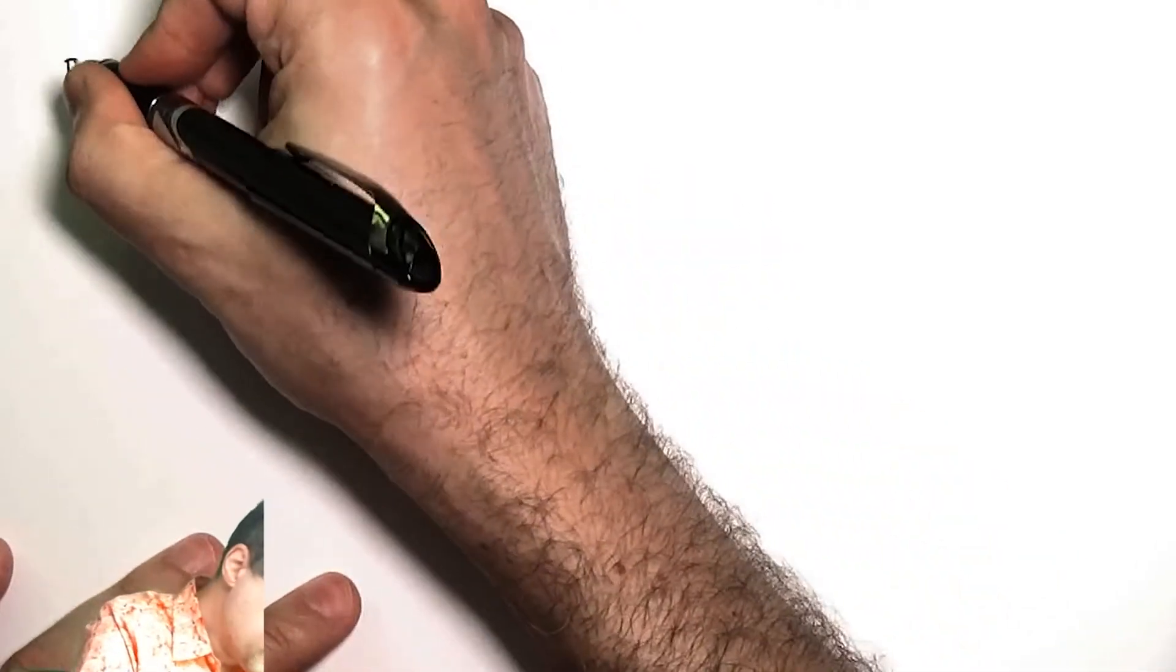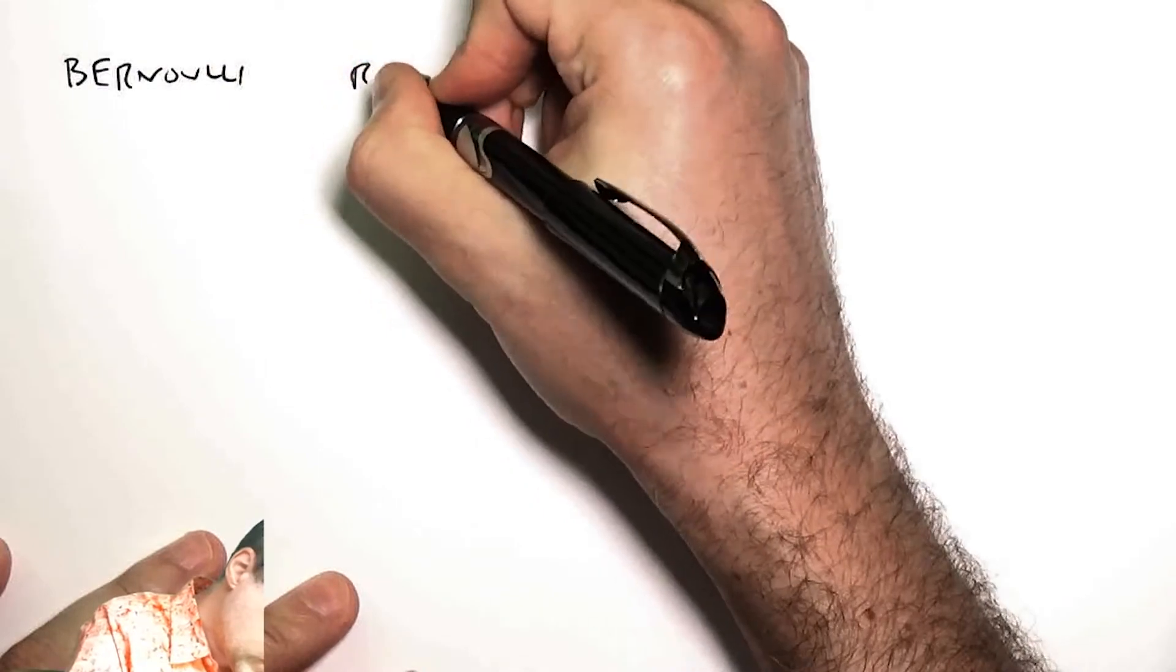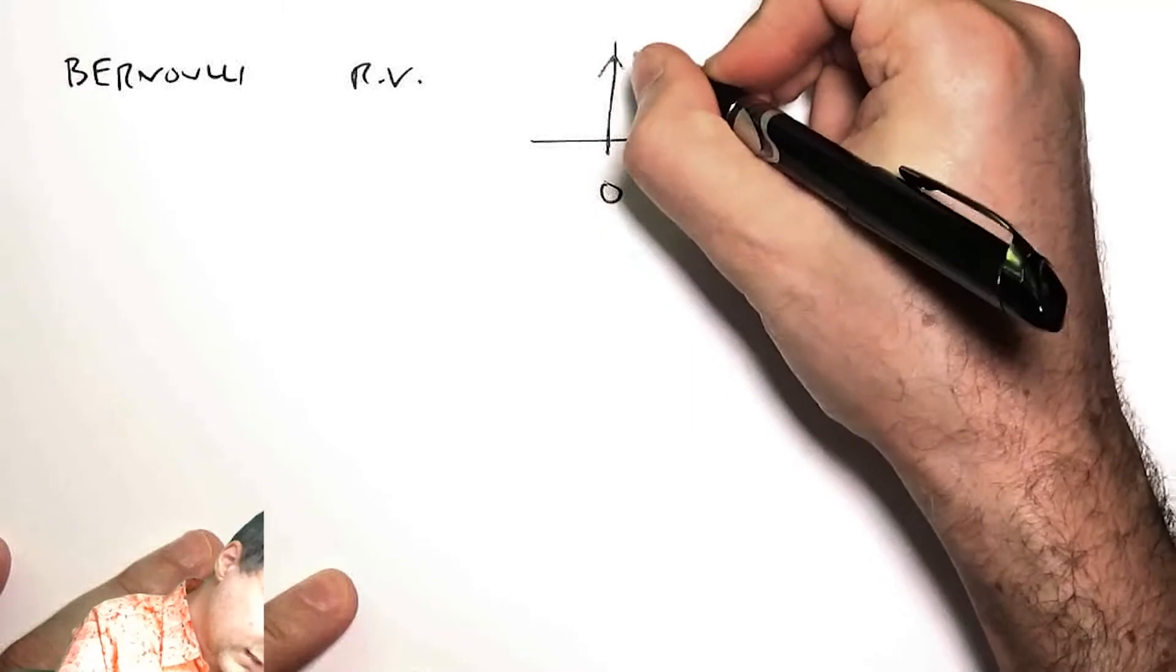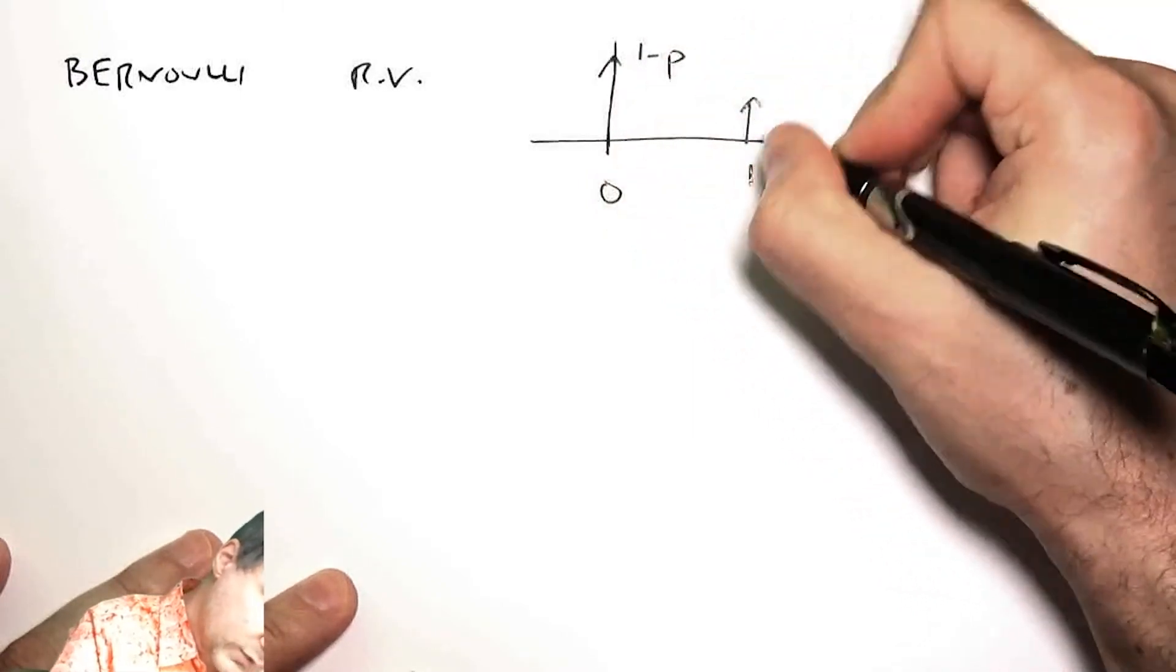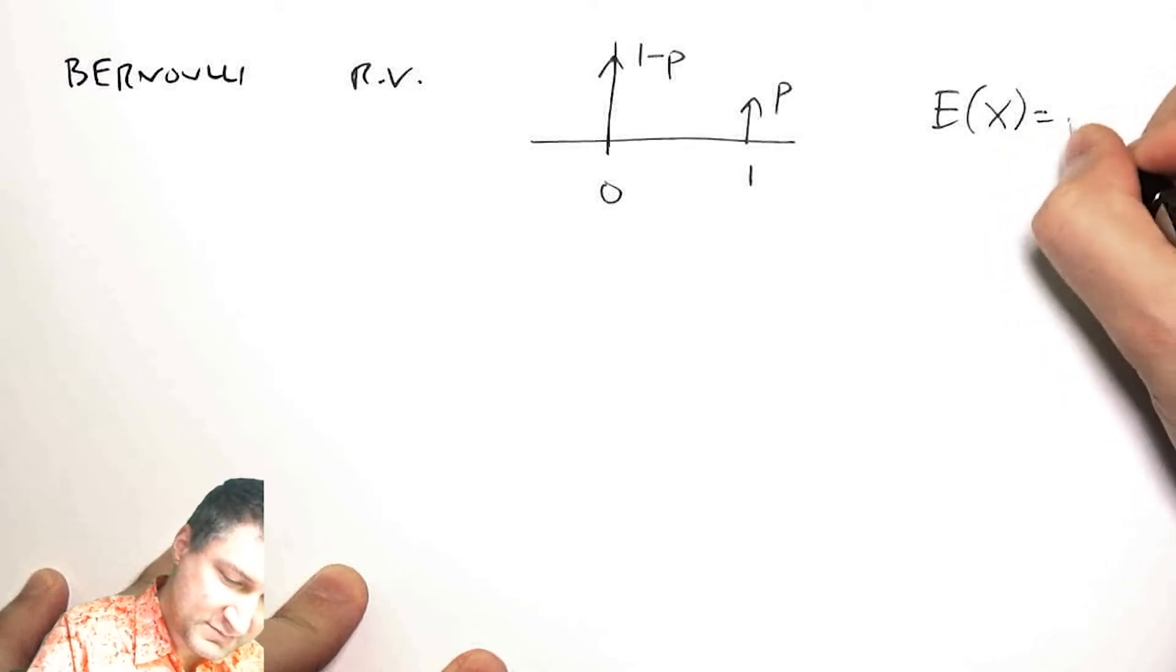And then I can talk about this in a more symbolic way. For example, the Bernoulli random variable. Remember that this was basically 0 with probability 1 minus p, and 1 with probability p,